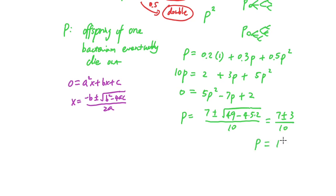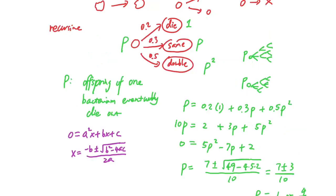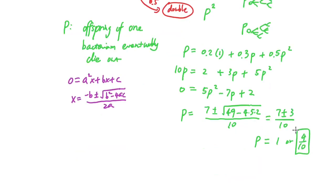So p equals 1 or 4 over 10. We know p equals 1 is not the meaningful answer — if you substitute it back, it gives 1 equals 0.2 plus 0.3 plus 0.5, which is trivially true and basically represents a bacterium that never reproduces. So p equals 0.4 is the answer that makes sense in the context of the original question.